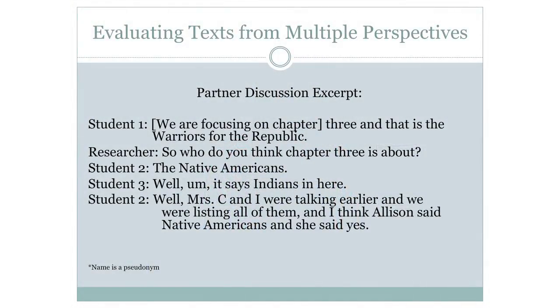Another example of students evaluating a text was when a few students were working together. During the partner discussion, one student said, 'We are focusing on Chapter 3, and that is the Warriors for the Republic.' When asked who Chapter 3 is about, a student responded, 'The Native Americans.' A third student said, 'Well, it says Indians in here.' Another noted that Mrs. C and she had been talking, and Allison said Native Americans, and the teacher confirmed that. The students read what the text said and then debated what it meant, ultimately learning that both words refer to the same group of people.